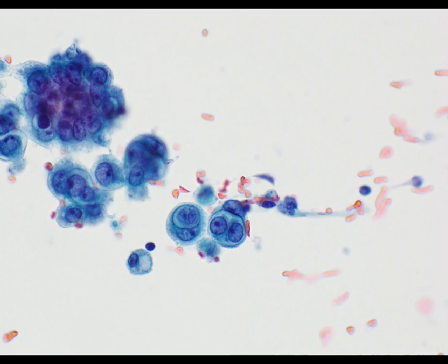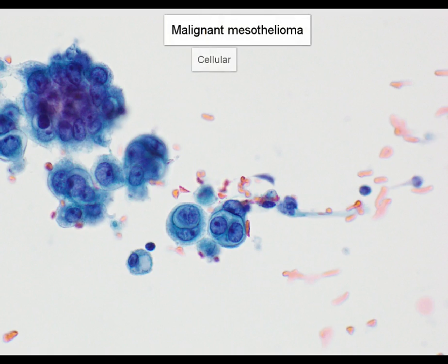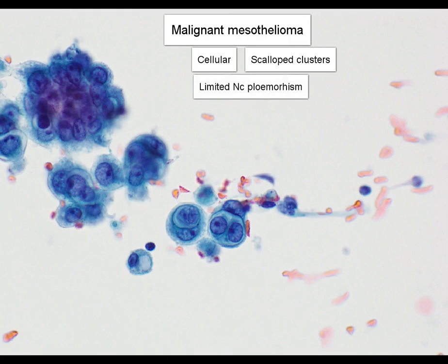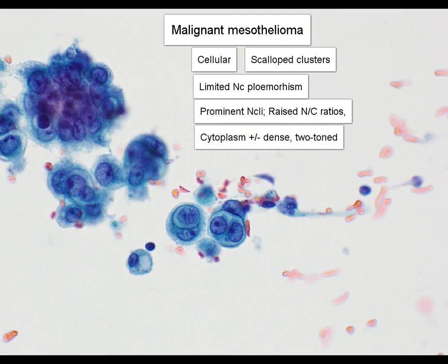So, in summary, we have seen some of the features of malignant mesothelioma. Usually the fluids are highly cellular. Cells are often arranged in cohesive clusters with scalloped borders. Occasionally they can be seen as dispersed cells. Often there is only mild to moderate nuclear pleomorphism. Nucleoli can be prominent, NC ratios can be raised, and cytoplasm is fairly dense and can preserve that two-tone cytoplasm characteristic of mesothelial cells.